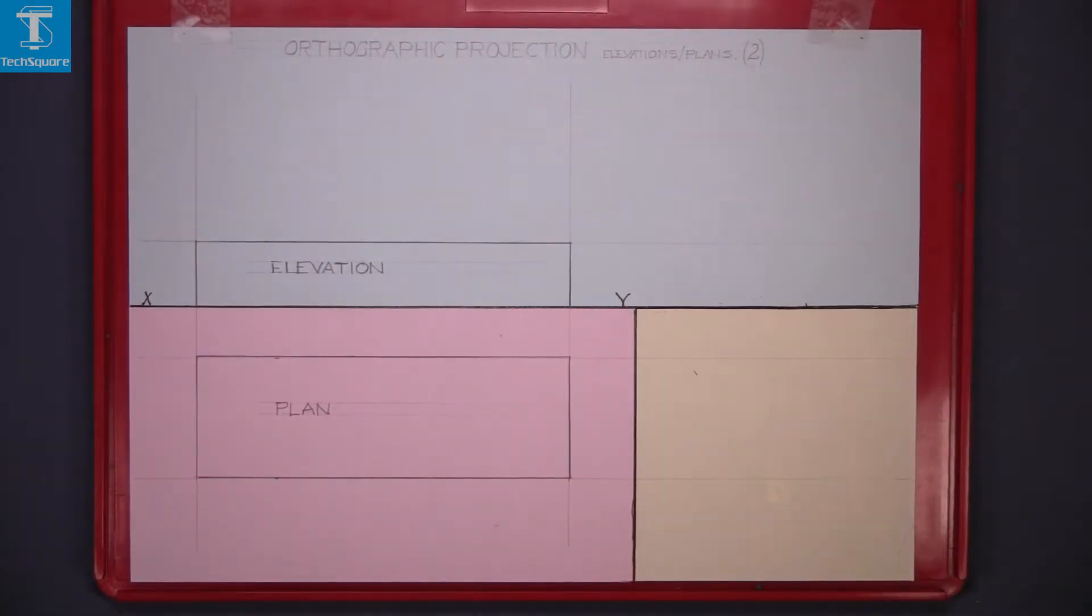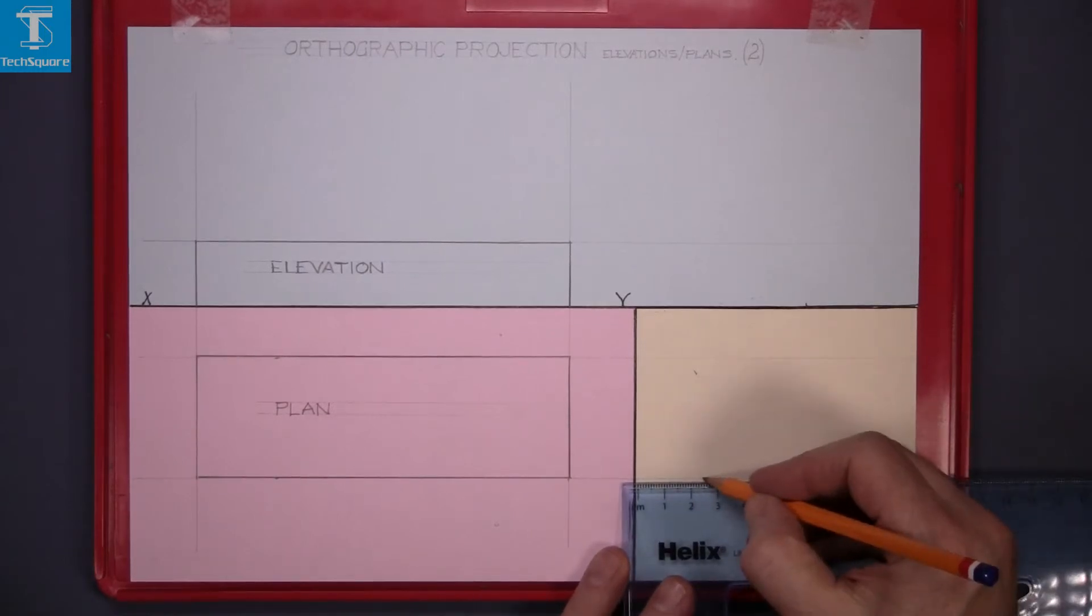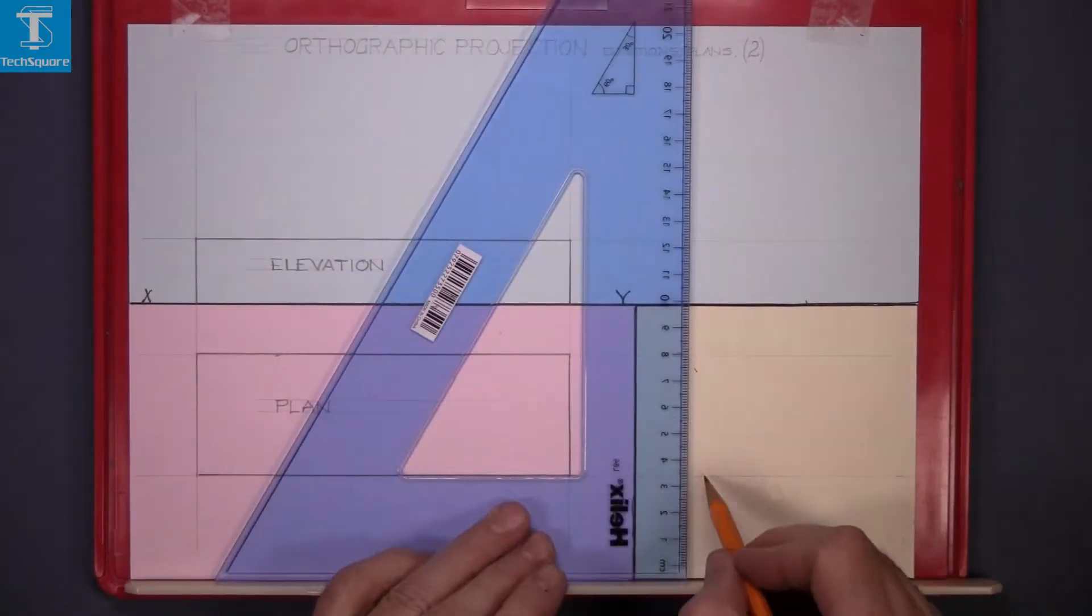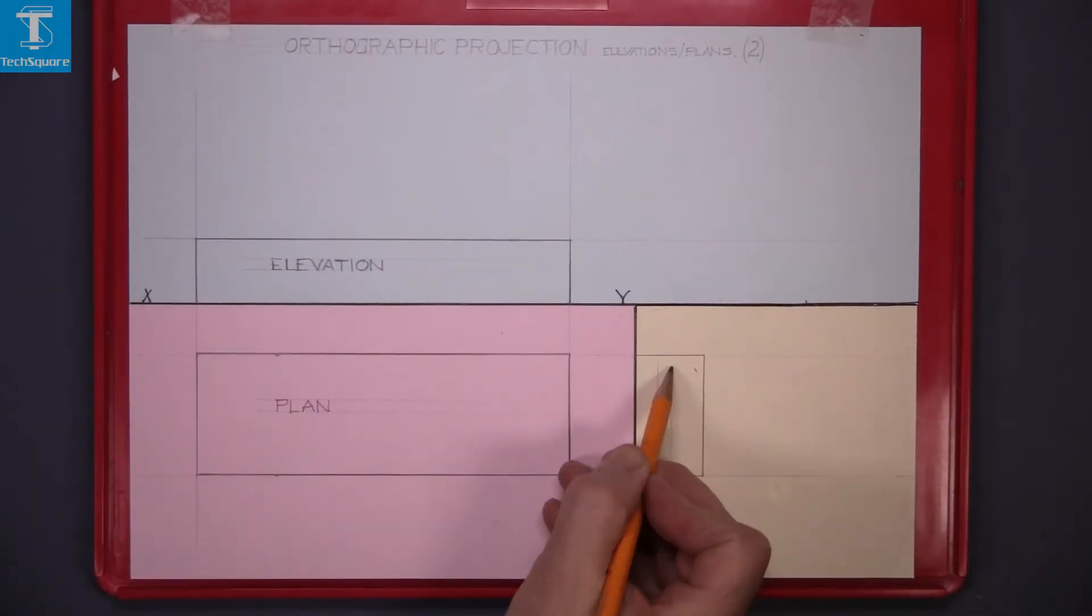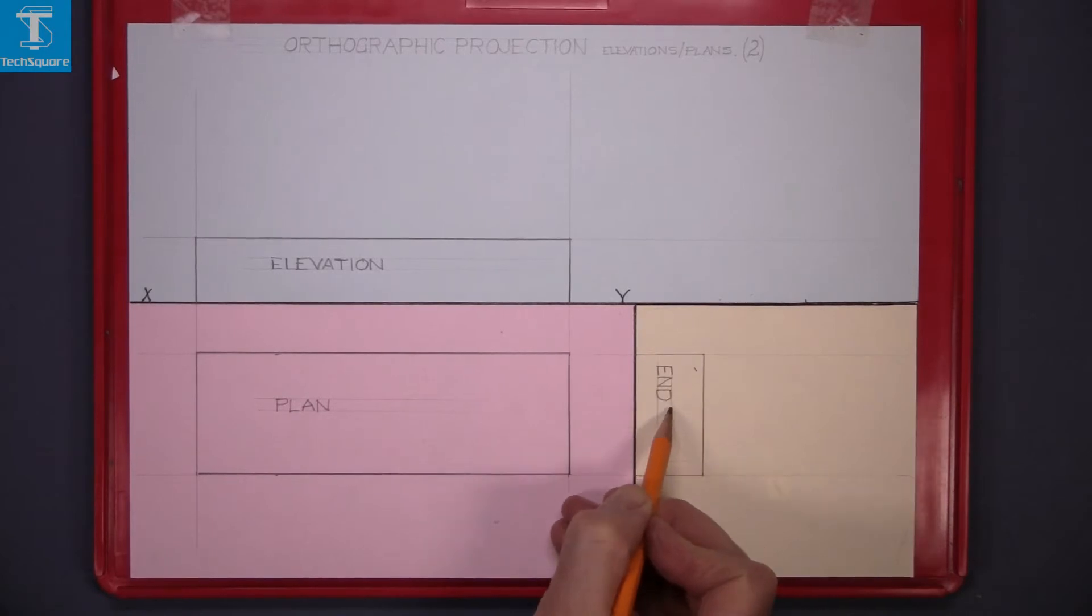And the thickness of this is the same thickness as the front of it, 25. So measure out your 25. And draw your line. And line it in. And that there is the end view complete.